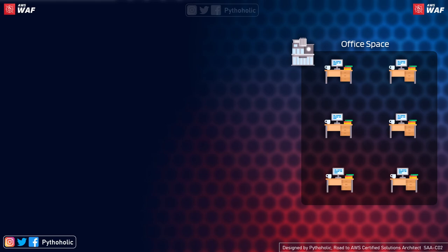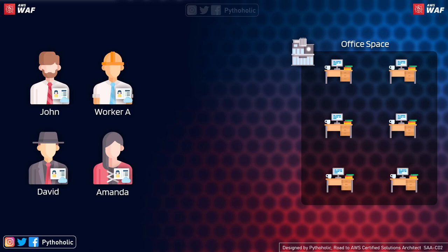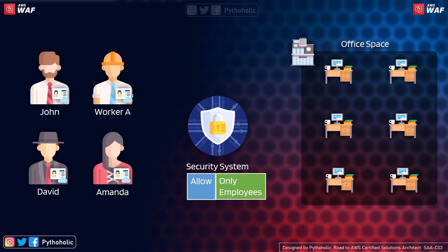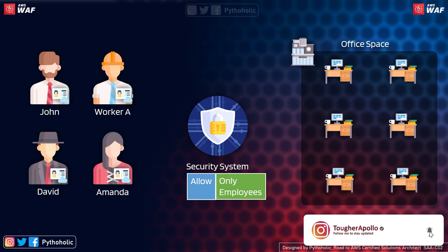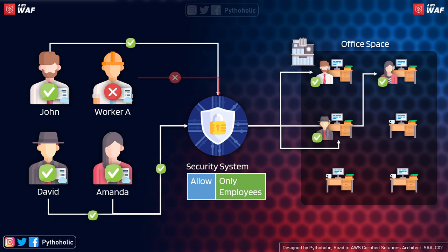Let's imagine a real-world scenario. Here is your office space. There are four members: John, David, and Amanda are employees of the office, and Worker A is here to fix the plumbing in the cafeteria. Among these four people, who should have access to the development business unit? Obviously the three employees — John, David, and Amanda. We have a security system in place that allows only employees to enter. So three people have access and one does not.